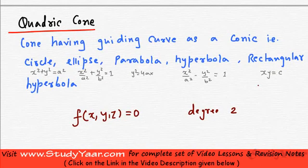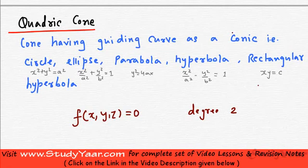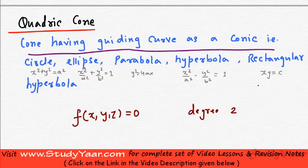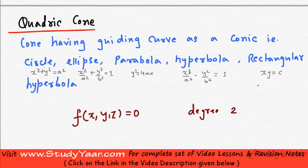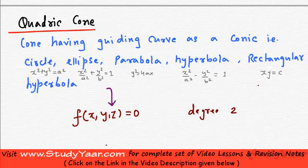Another way to define a quadratic cone is to say it is a cone having a guiding curve that is a conic. The conics are: circle, ellipse, parabola, hyperbola, and rectangular hyperbola. So if your guiding curve is a conic — essentially an equation in two variables of degree 2 — then you get a quadratic cone. We are basically going to be concerned only with quadratic cones.